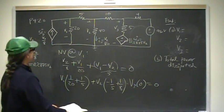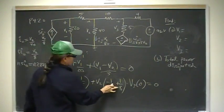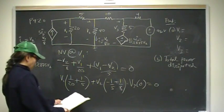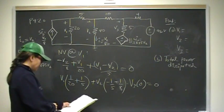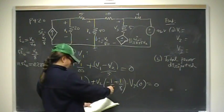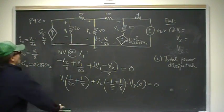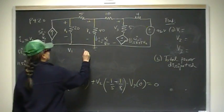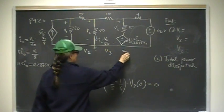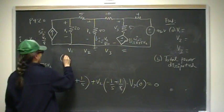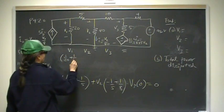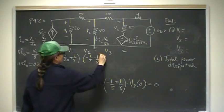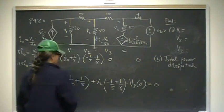So now my matrix first row is starting to take shape: for V1 I have 1 over 20 plus 1 fifth; for V2 I have negative 1 fifth minus 1 eighth; and zero for V3, equaling zero. My matrix is: [1/20 + 1/5, −1/5 − 1/8, 0 | 0].